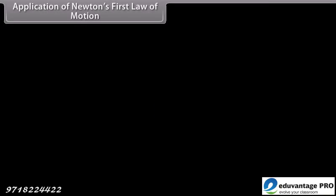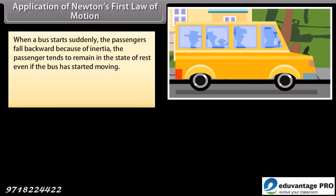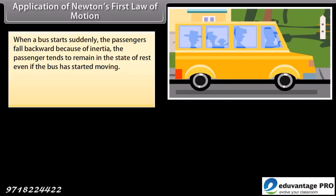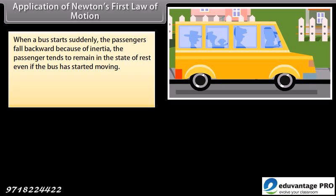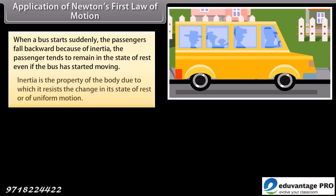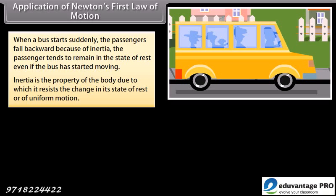Application of Newton's first law of motion. When a bus starts suddenly, the passengers fall backward because of inertia. The passenger tends to remain in the state of rest even if the bus has started moving. Inertia is the property of the body due to which it resists the change in its state of rest or of uniform motion.